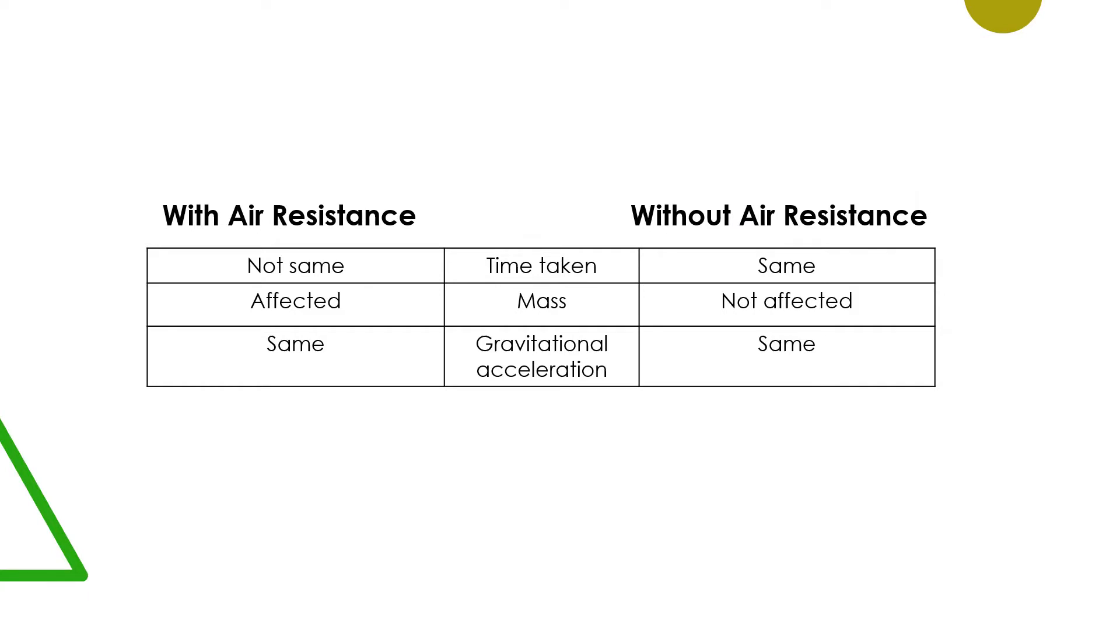From the table, we can conclude that the time taken for the feather and metal block with presence of air resistance and without the presence of air resistance are not the same. Second, the mass will affect the velocity with air resistance and that's why the feather reaches the base longer. And last, the gravitational acceleration will be the same regardless of the mass of free-fall objects.